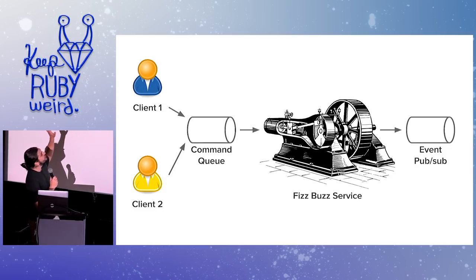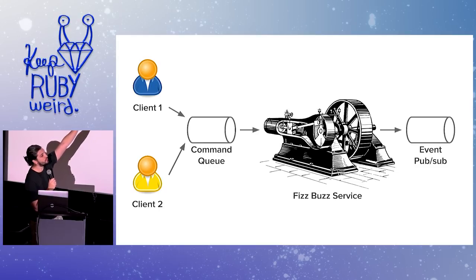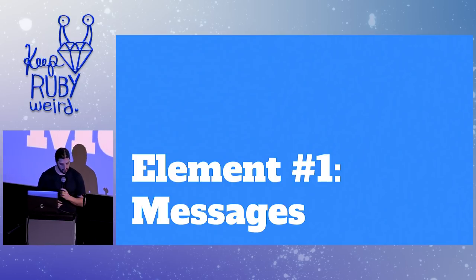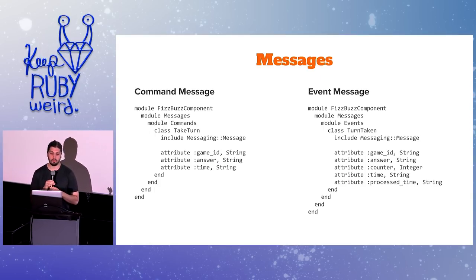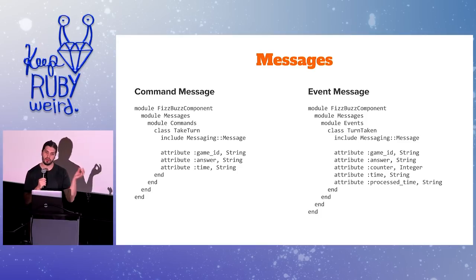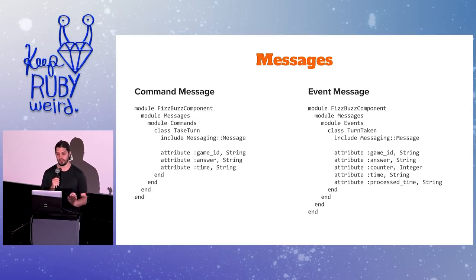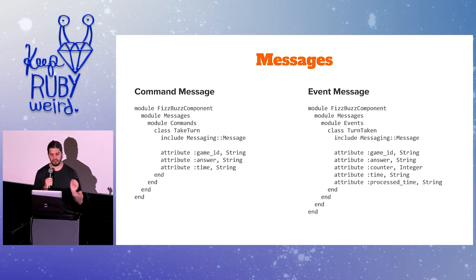All of that sets up this architecture: we have clients sending command messages over a command queue to the FizzBuzz service, which publishes events. We have our message objects — command message and event message. They are objects in Ruby, but more importantly they're schemas and contracts that our services agree on with other services to exchange information. We have this pairing of command messages and event messages: the command is to take a turn, and the event is turn taken. There are other events I'll cover in a minute.